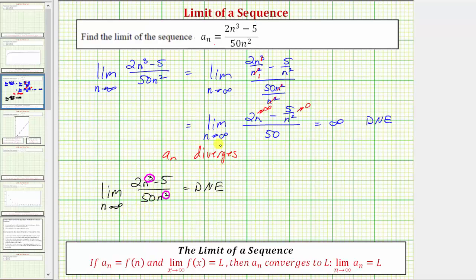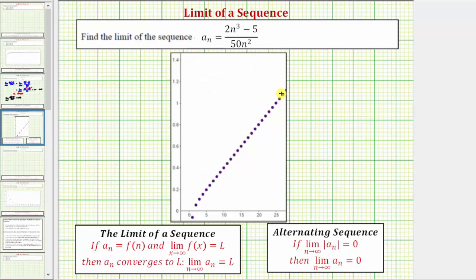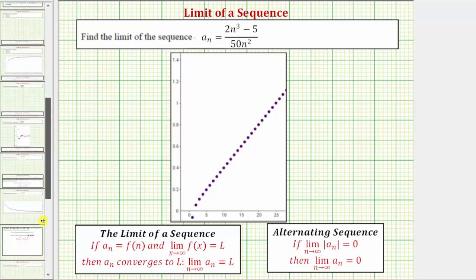Let's look at the graph of the sequence. Here's the graph of a sub n, where n is along the horizontal axis and a sub n is along the vertical axis. Notice, as we generate more and more terms in the sequence, the terms increase without bound — which is why the limit approached positive infinity, and we say a sub n diverges. I hope you found this helpful. Thank you.